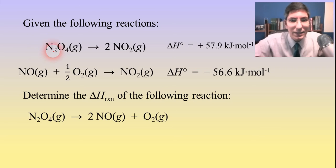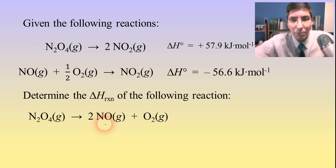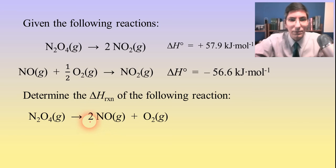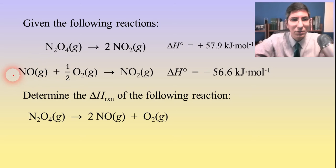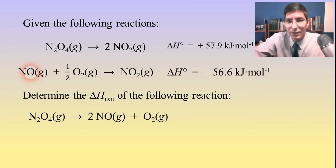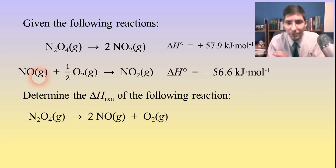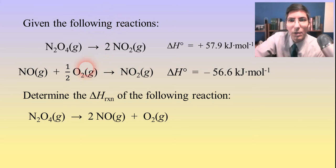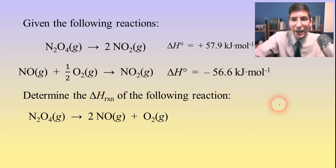Something else I notice is that NO, in my overall reaction, is on the product side with a coefficient of 2. In my elementary reactions, NO only appears in reaction number 2, but it's on the wrong side — it's on the left side. It needs to be on the right side. So I'm going to flip reaction number 2. When I flip the reaction, taking reactants to the product side and products to the reactant side, it changes the sign of delta H. So delta H becomes positive 56.6 kilojoules per mole.